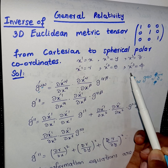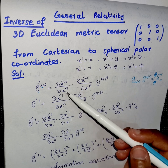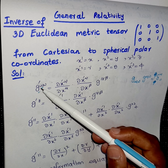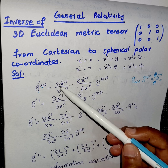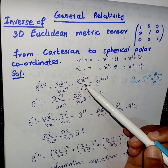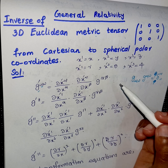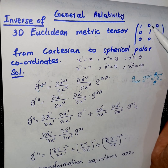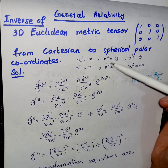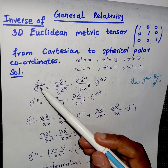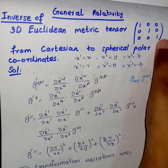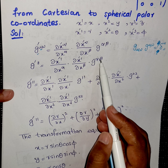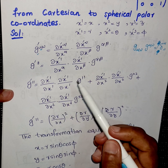We want to convert from Cartesian to spherical polar, so the old variables are x, y, z and the new variables are r, θ, and φ. Using the transformation law of a tensor in contravariant form, we express g'_μν. Here μ and ν are in superscript, so ∂x'_μ terms appear in the numerator. To find g'¹¹, I set μ=1 and ν=1, giving us (∂x'¹/∂x^α)(∂x'¹/∂x^β) g^{αβ}.